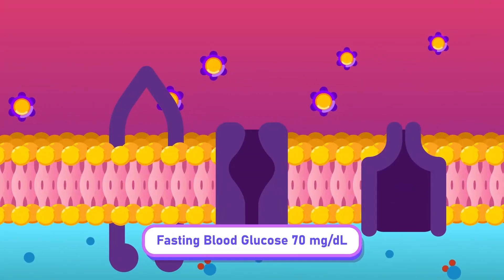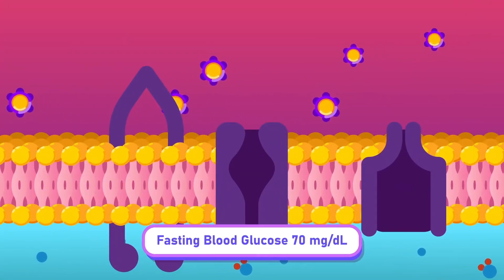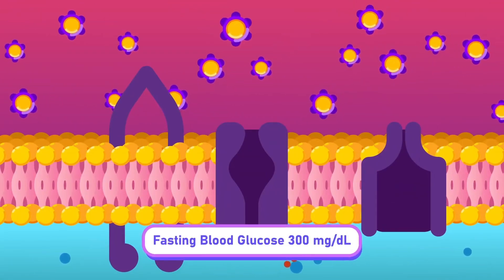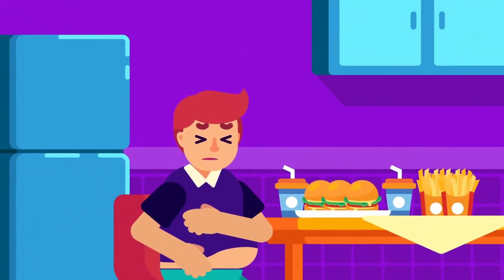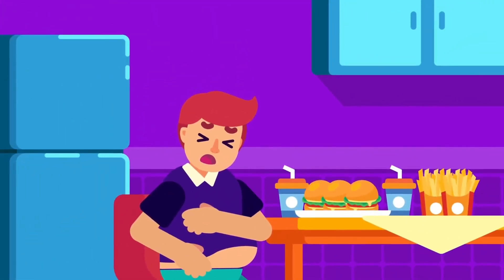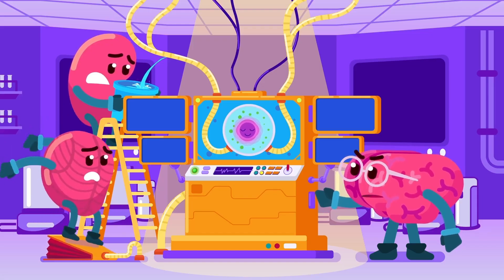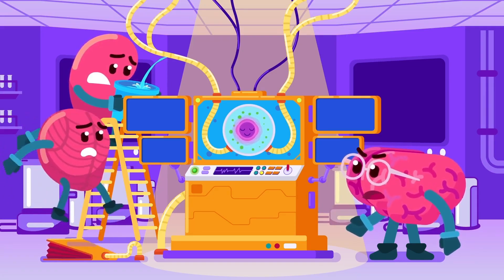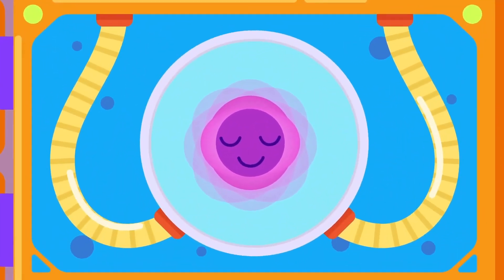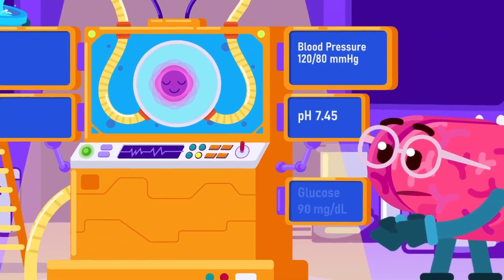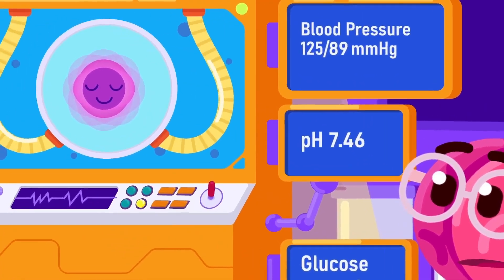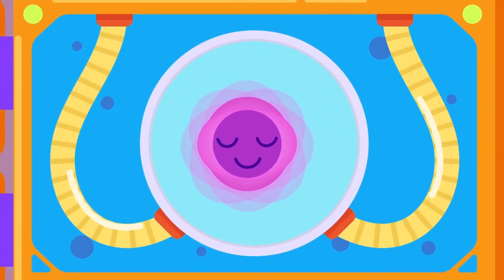A blood glucose level between 70 and 100 mg per deciliter is necessary for normal functions; exceeding that may indicate diabetes is developing. The amount of water and the concentration of various ions in the blood need to be at a certain amount as well, to let the transport of nutrients and waste occur properly. These are just a few out of hundreds of variables to maintain, which have fluctuating normal ranges, but still allow an organism to thrive.